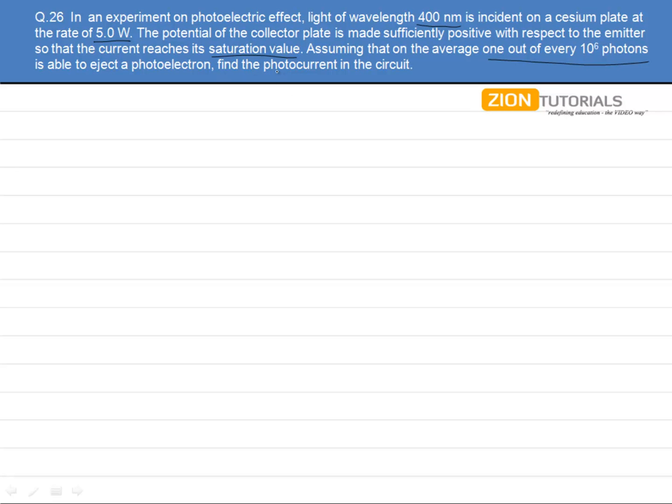All we need to find is the photo current in the circuit. This can be found out by finding the number of photoelectrons. If I am able to find out the number of electrons or the photoelectrons per second, I will be able to find the photocurrent.